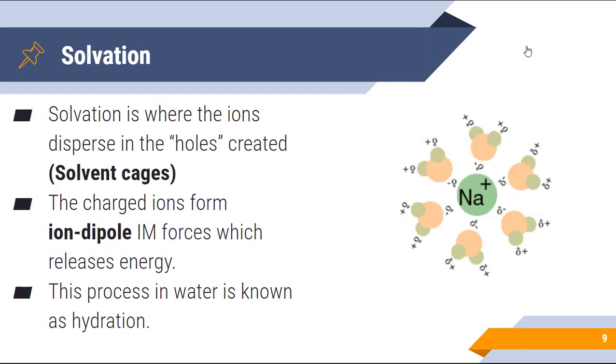The last step is solvation, which sounds like you're solving a problem, but you're not. Well, you kind of are, but I digress. Solvation is where the ions disperse into the holes that are created. Those holes are called solvent cages. So when the solvent separates, there's little holes that are in the solvent. That's where the solute particles are able to go in.